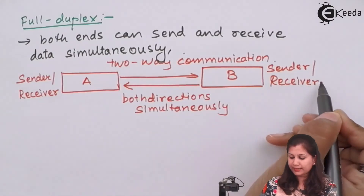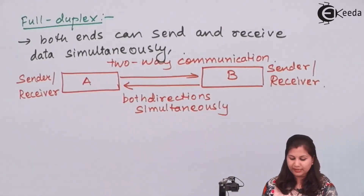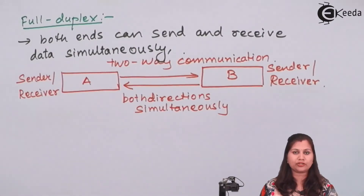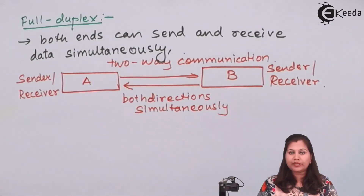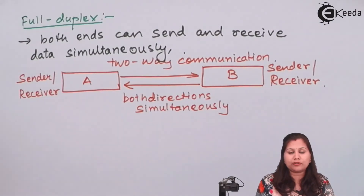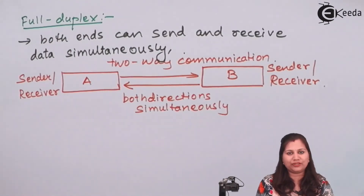Full duplex communication is common in PCs. When two PCs are communicating with each other, that is also a kind of full duplex communication. So in this video we studied the types of serial data transmission modes: simplex, half duplex, and full duplex mode of communication. I hope this topic is clear to you. Thank you.